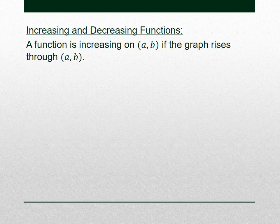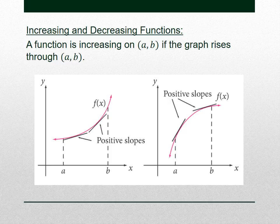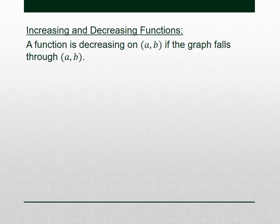Increasing and decreasing. We say a function is increasing on an interval from A to B if the graph rises through AB. As we go from A to B, the graph rises. Notice that the slopes of these tangent lines are positive. The same thing over here — going from A to B, the graph of f(x) rises, and the slopes of those tangent lines are positive.